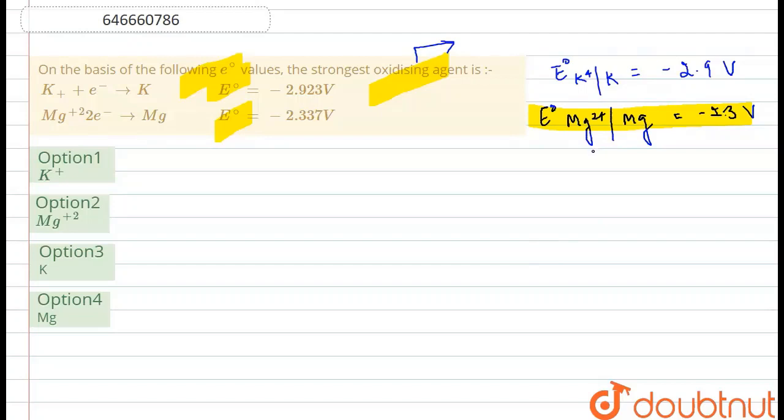Now out of Mg²⁺ and Mg, we know that since Mg²⁺ is getting reduced, that means it is the oxidizing agent because it is oxidizing the other species but itself it is getting easily reduced. So here the strongest oxidizing agent would be Mg²⁺, which is option number two.